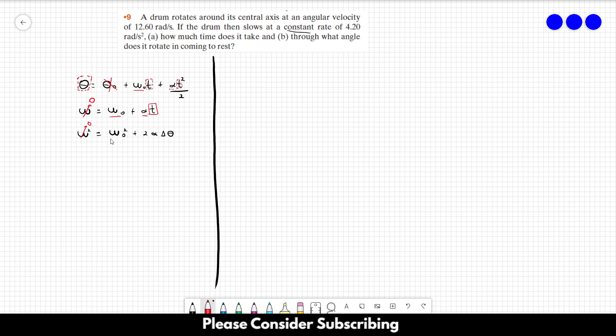So this one we know is zero, we know this value which is 12.6, we know the acceleration, and we don't know delta theta.